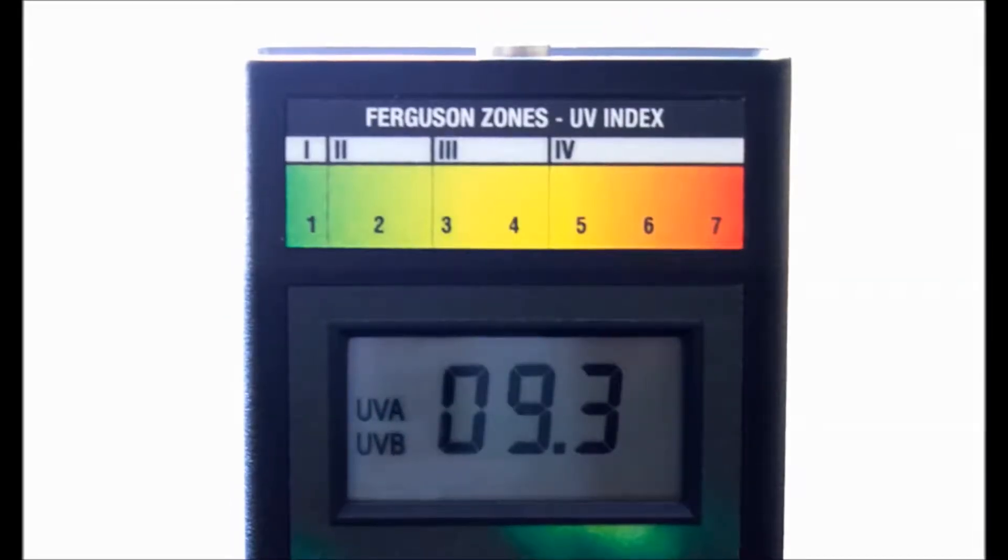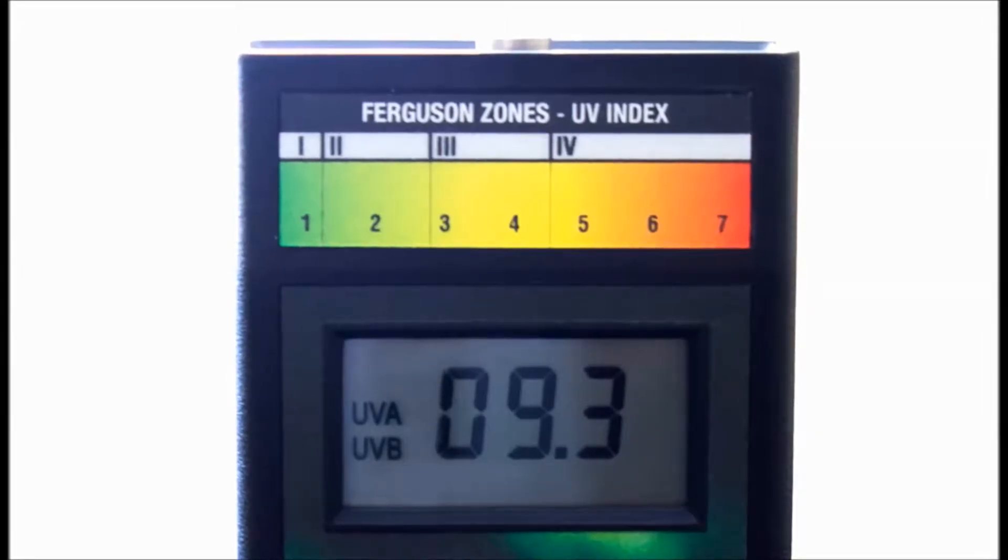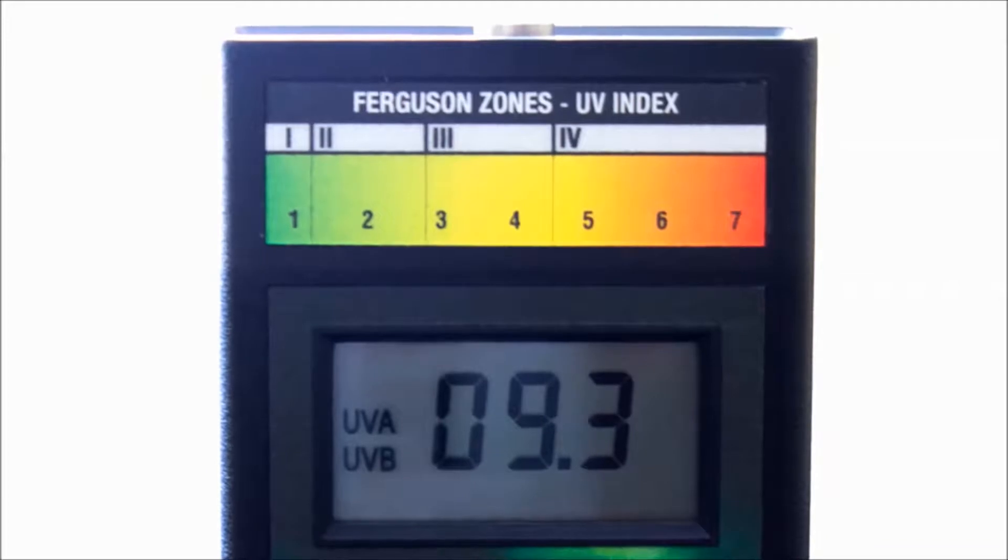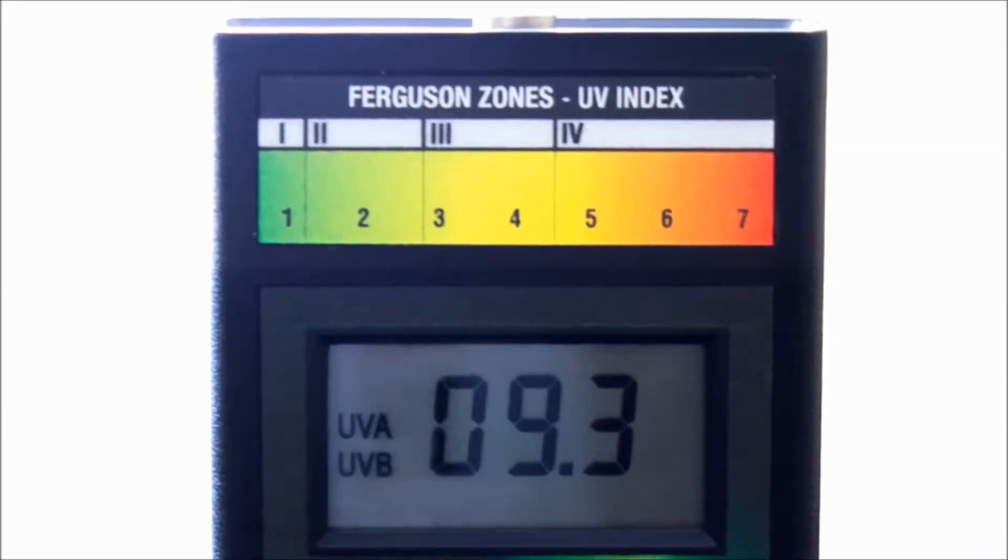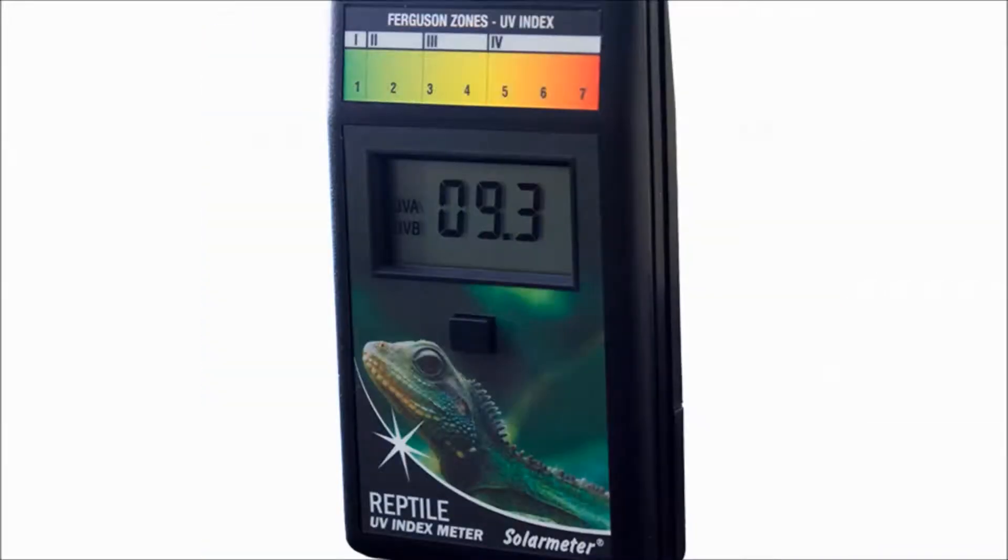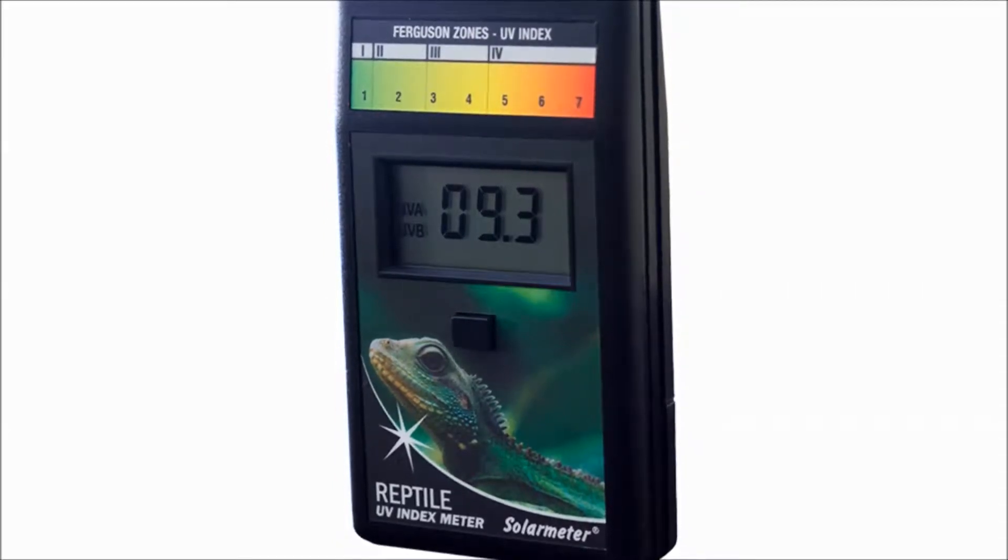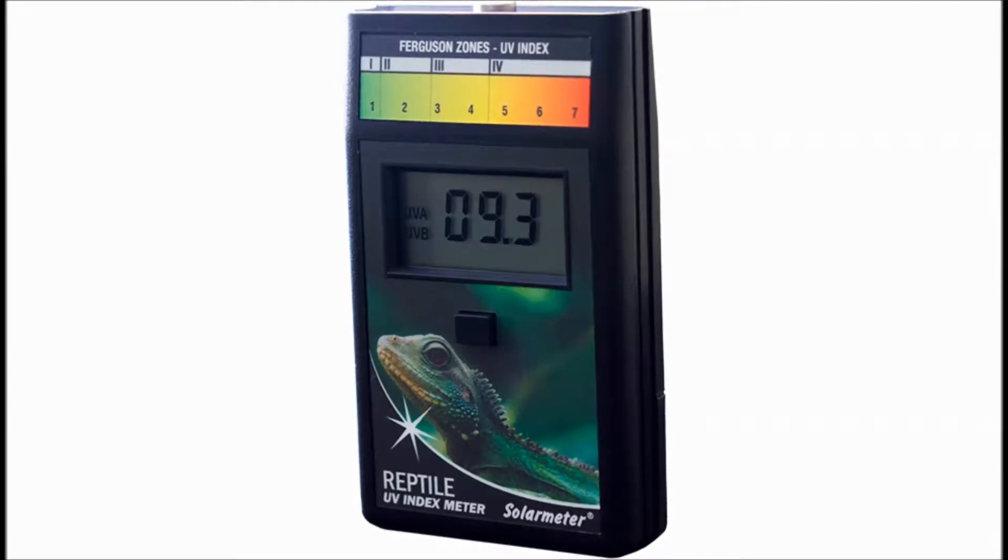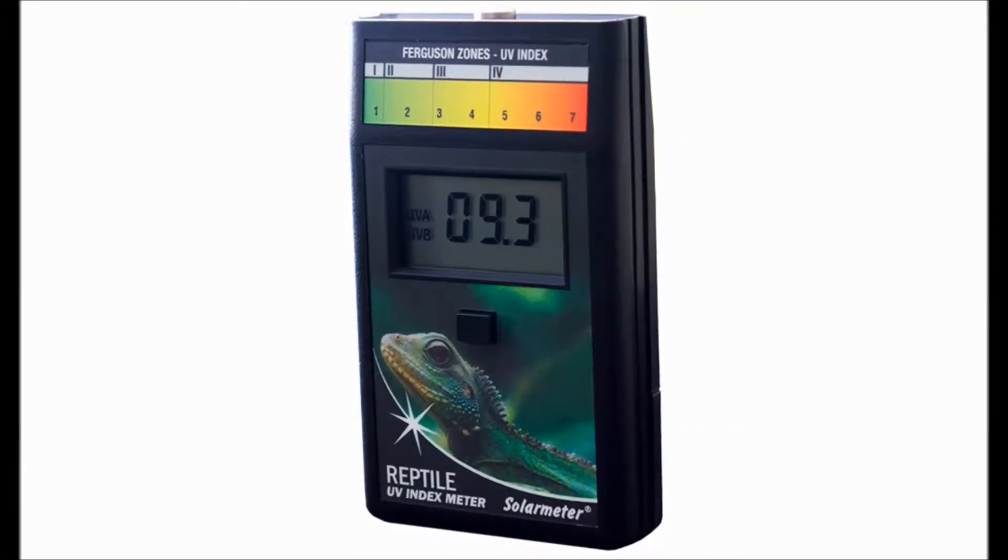Because the Model 6.5R Reptile UV Index Meter's erythemally rated action spectrum is extremely close to the action spectrum for vitamin D3 synthesis, it's the ideal tool to determine proper UV dose for your reptile, per the appropriate Ferguson zone for the species. And now the Ferguson zone chart is displayed right on the meter's face, giving the user an instant and accurate dose reference.